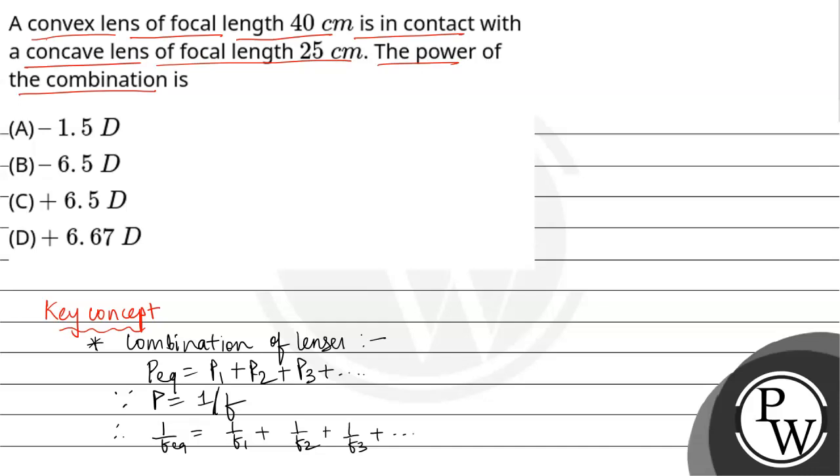Next key concept is for convex lens, focal length is positive. And if focal length is positive, so power will be also positive. And for concave lens, focal length is negative, so power is also negative.